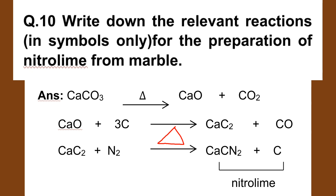Number 10. Write down the relevant reactions in symbols only for the preparation of nitrolime from marble. Marble is CaCO3. CaCO3 heated gives CaO, then CaO reacts to form nitrolime. Number 11 part A: CaC2 plus N2 gives calcium cyanamide (nitrolime).